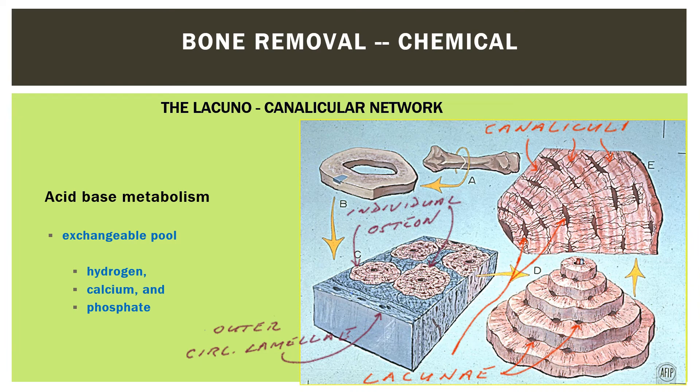The lacunocanalicular system is demonstrated in this illustration of adult bone, as well as the organization of the circular lamellae and the contained osteons. Successive slices show in increasing detail the organization into outer circumferential layers — like the rings of a tree — surrounding inner secondary osteons, the core mechanical unit.